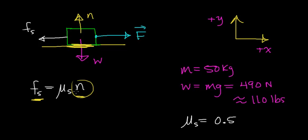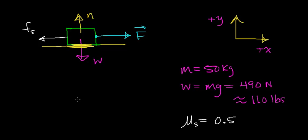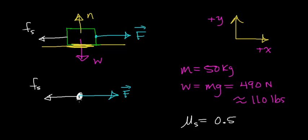Let's draw a free body diagram that represents the forces acting on this box. If we represent the box as a point, we're going to draw the forces acting on it. There's going to be the force due to our pull in the positive x direction, the force of static friction opposing that motion in the negative x direction, a weight force pulling the box downward, and a normal force pushing up on this box, preventing it from passing through the surface.